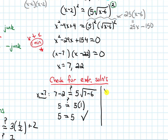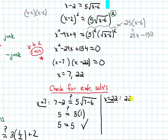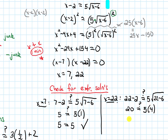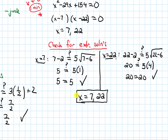Now let's check x equals 22. Plugging into the left-hand side: 22 minus 2 equals 20. The right-hand side is 5 times the square root of 22 minus 6, which is 5 times the square root of 16, which is 5 times 4, equaling 20. Both sides give 20, so x equals 22 also works. Both answers check out, so our solutions are x equals 7 and x equals 22.